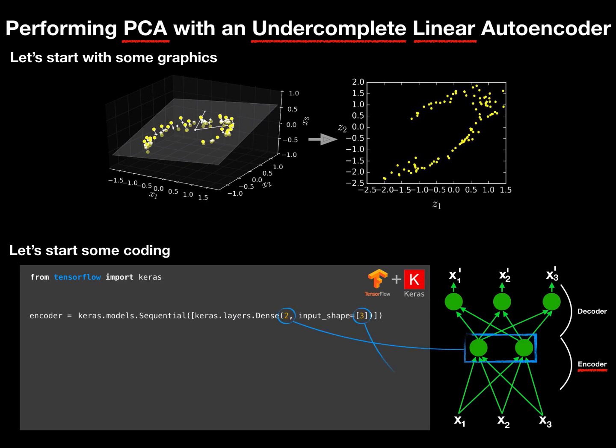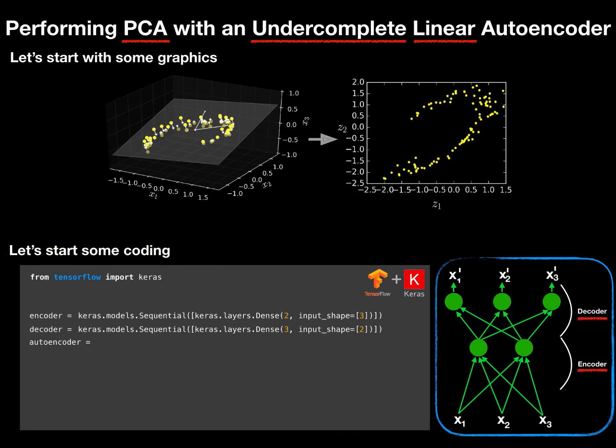Now we need to define what is the decoder in our neural network. This part consists of a sequential layer also, and has three nodes which correspond to our output values and two input values which come from the hidden layer. As you can see, we are defining our layers sequentially. That is why the type of our layers is sequential. Now is the time to define our autoencoder. Remember, an autoencoder has two parts: encoder and decoder.